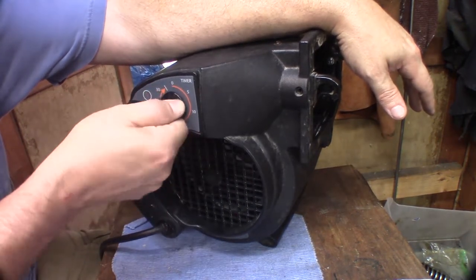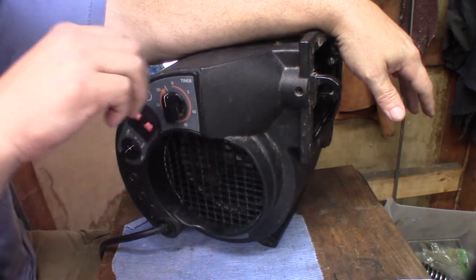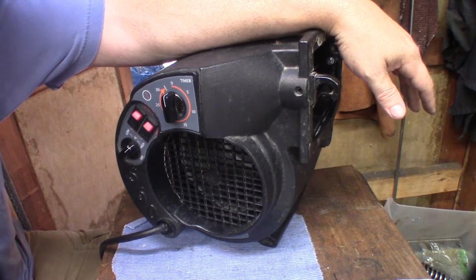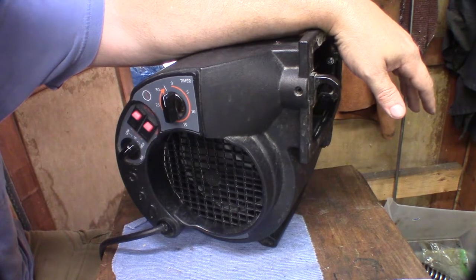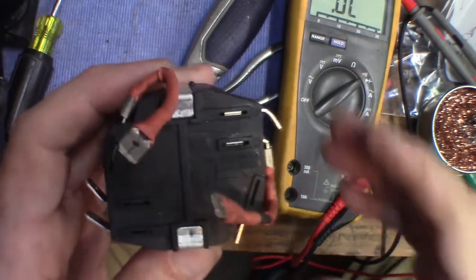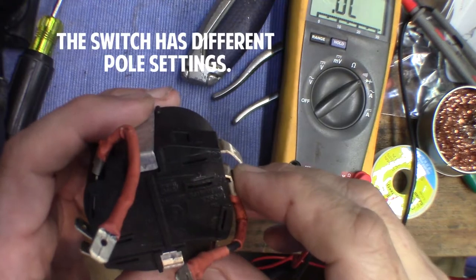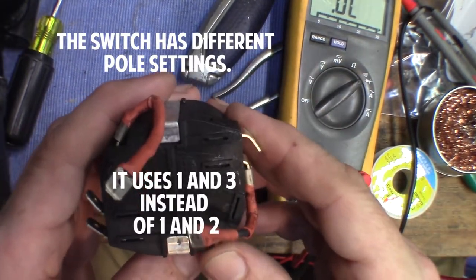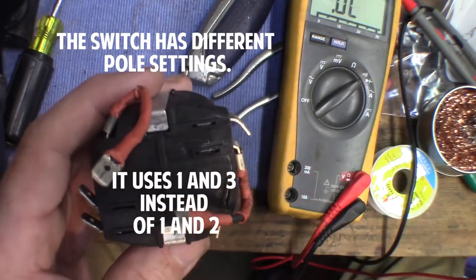But when you turn the timer on, it shuts off. And then when you turn the timer off, it turns on. Obviously something's different. I'm going to have to figure this out. Alright, so either I took it off the one I didn't think I took it off of, or this switch is a little bit different. Maybe they updated it? Not sure. It's got the same type number. Not quite sure. But I have figured it out.